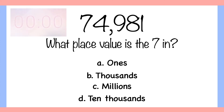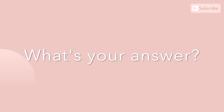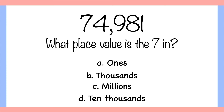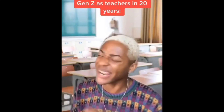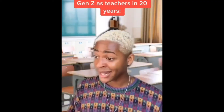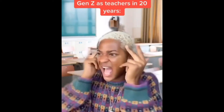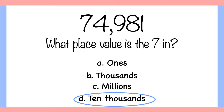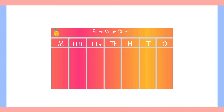Ready? What's your answer? Did you say D? That's correct. Period, queen. It's the smart for me, it's the brains for me, it's the knowledge for me. If you weren't too sure at first, remember, you can put your number in the place value chart to help you. The 7 is in the 10,000th place.